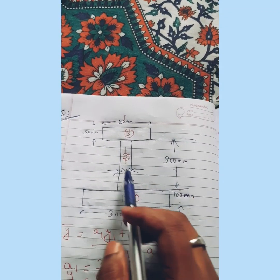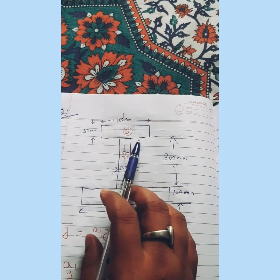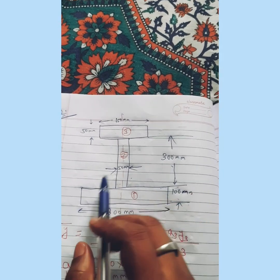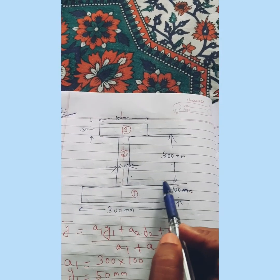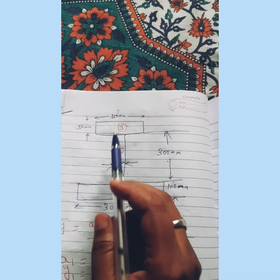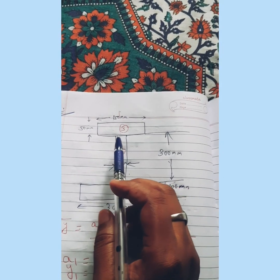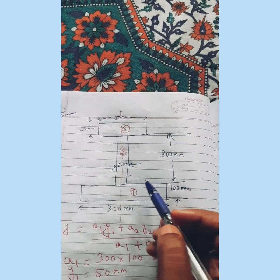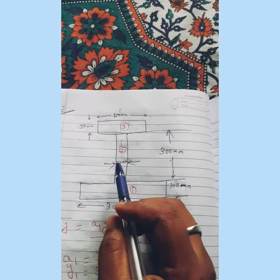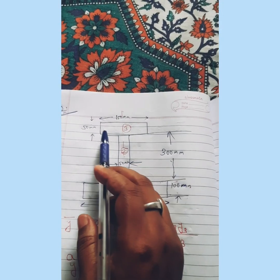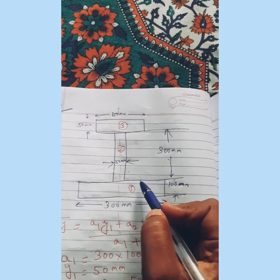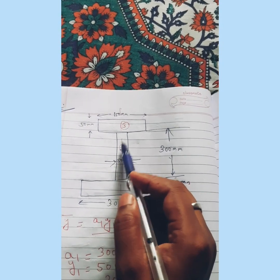This is an I-section (eye section). We have to find out the center of gravity of this section. The horizontal portion is called the flange and the vertical portion is called the web. This is the bottom flange, this is the web, and this is the top flange. We will name them as section 1, section 2, and section 3.